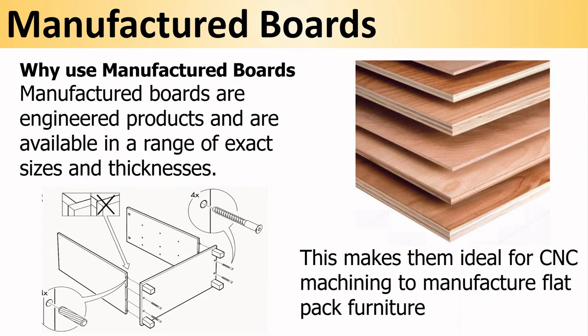Manufactured boards are engineered products. Because they're made in a factory, they are available in a range of exact sizes and thicknesses. For example, 6mm thickness MDF will consistently measure 6mm thick. This makes them ideal for CNC machining to manufacture flat pack furniture.